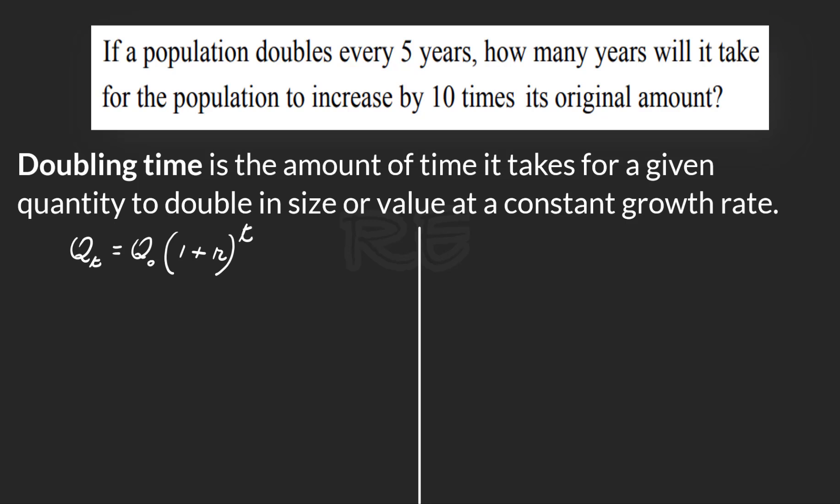Q₀ is the initial amount. If we choose our initial amount to be one dollar, it will become two dollars after five years.